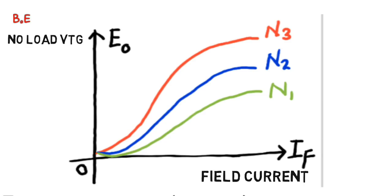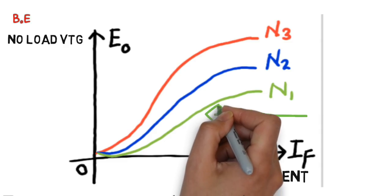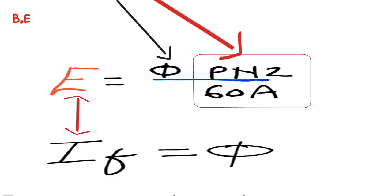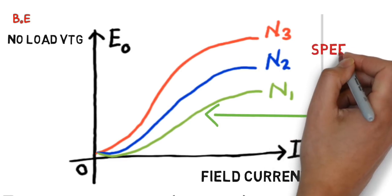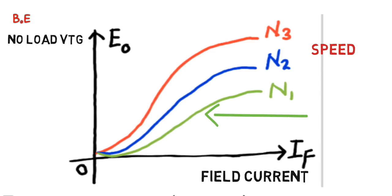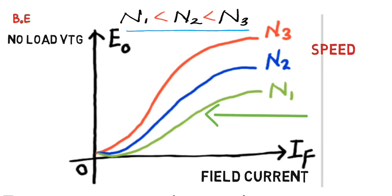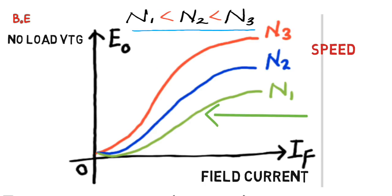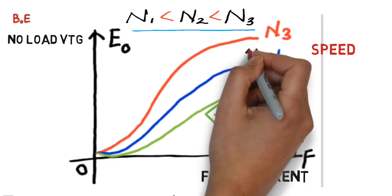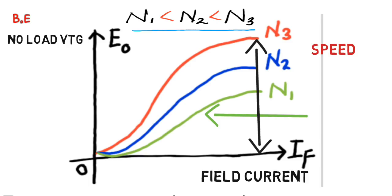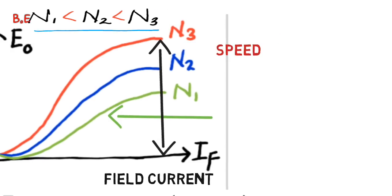Increasing field excitation increases induced voltage. Since induced voltage also depends on speed, we draw characteristics for different speeds — increasing speed also increases induced voltage, so induced voltage for N3 is greater than for N1. However, after a certain field excitation, the core gets saturated and flux becomes constant, so voltage also remains constant after that point. This is the open circuit characteristic.